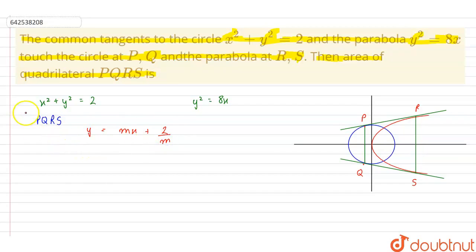Now since it is also a tangent to the circle, therefore its distance from the center of circle that is (0,0) must be equal to its radius that is equal to √2. So applying the formula we get 2/m divided by √(1 + m²) = √2.